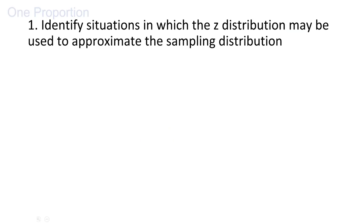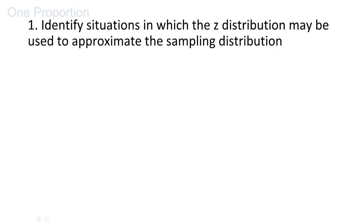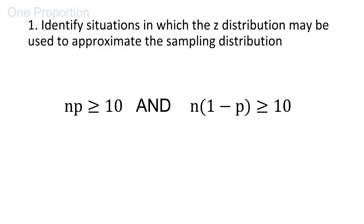Let's get started with exploring inference for one proportion. First, we will identify situations in which the Z distribution may be used to approximate the sampling distribution. We started doing this last week in Lesson 7. When the bootstrapping or randomization distribution was approximately normal, we used the Z distribution. Last week, we just looked at the sampling distribution and visually judged whether or not it was approximately normal. Now, I'll show you some more objective guidelines.